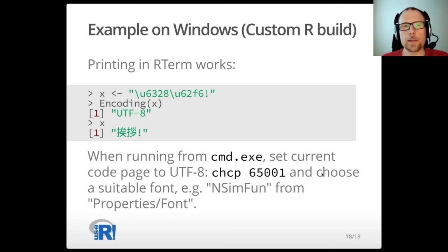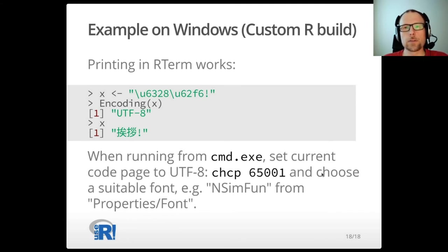So that's all from me. I hope I have explained the basics of R encoding support. More is available in my blog and of course in the R manuals. I hope I have also explained that R actually supports Unicode. The problem on Windows is setting UTF-8 as the native encoding, and what we need for that is a new toolchain to rebuild R and packages. Thank you.